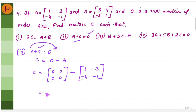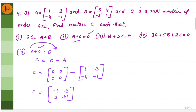Now we do normal subtraction. 0 minus 1 is minus 1; 0 minus of minus 3 is plus 3; 0 minus of minus 4 is plus 4; 0 minus of minus 1 is plus 1. So matrix C is: minus 1, 3, 4, 1.